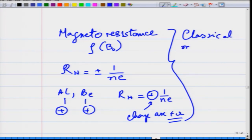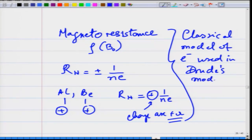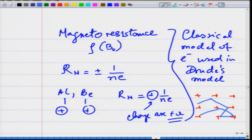These failures of Drude's model become apparent because it considers electrons as classical objects — hard billiard ball-like structures colliding with ionic cores as they move through the metal. In this picture, electrons scatter from ion cores and resistivity arises from that scattering process.